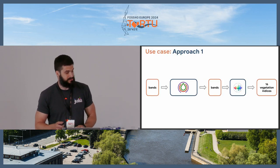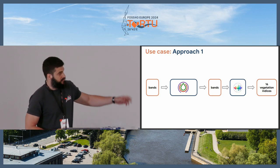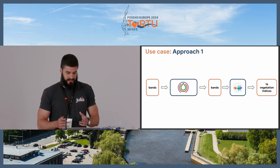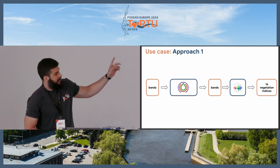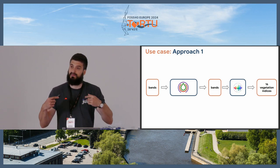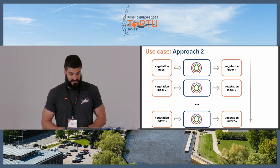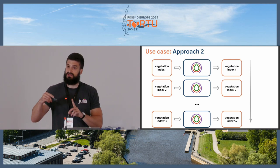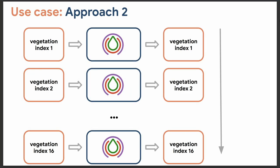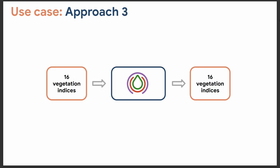The three approaches are as follows. Approach one uses SpectralIndices.jl: we give the necessary bands (six or seven) to the model, train it to output the bands, and then feed those outputs to SpectralIndices.jl to obtain all 16 indices. Approach two trains on one vegetation index at a time in series to predict the next step for all 16 indices — done in series to mimic a larger workflow where you'd process every pixel. Approach three feeds all 16 vegetation indices directly to the model to obtain the next-step prediction.